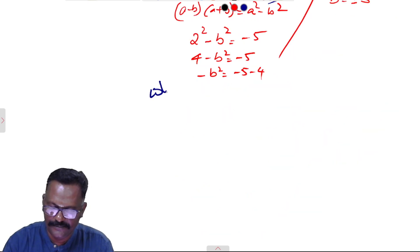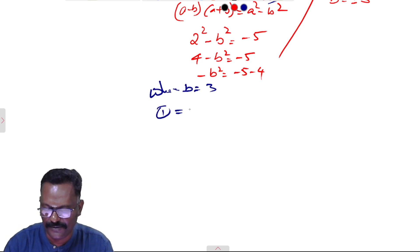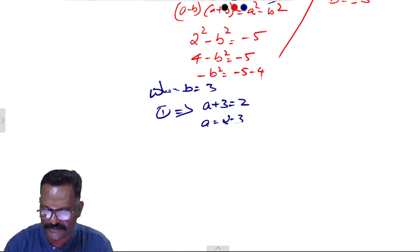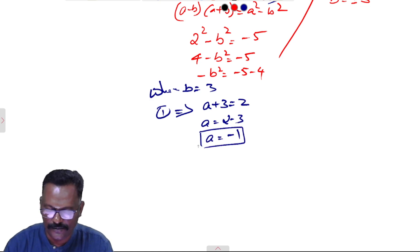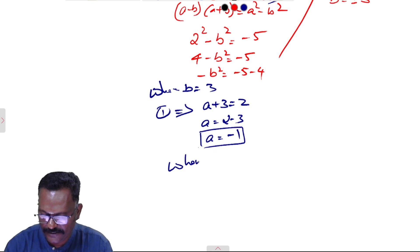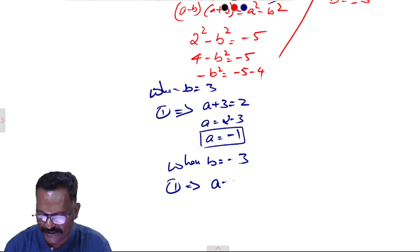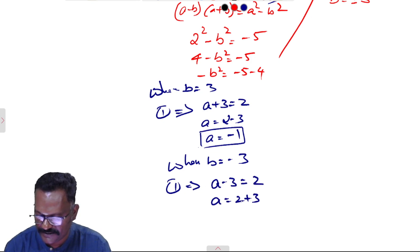Case 1: When b equals 3, substituting into Equation 1: a plus 3 equals 2, so a equals 2 minus 3, giving a equals minus 1. Case 2: When b equals minus 3, substituting into Equation 1: a minus 3 equals 2, so a equals 2 plus 3, giving a equals 5.